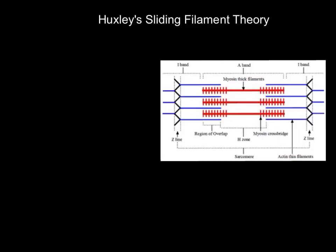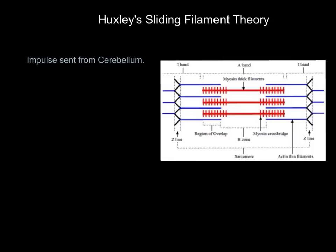So how does a muscle contract? We want the two ends of the sarcomere — the Z lines — to move closer together. We need the actin to slide past and over the myosin filaments. When the sarcomere shortens, the muscle contracts.